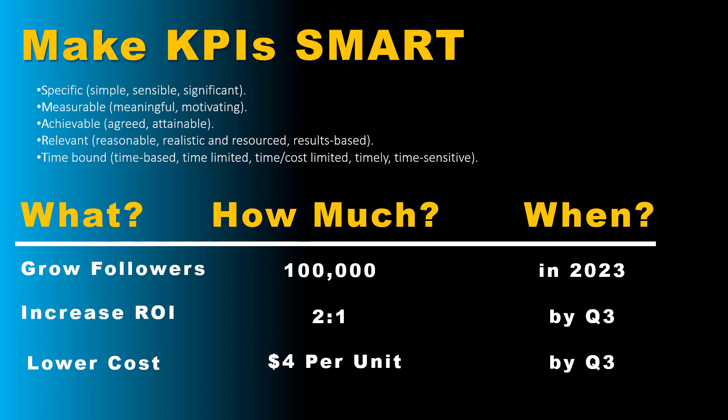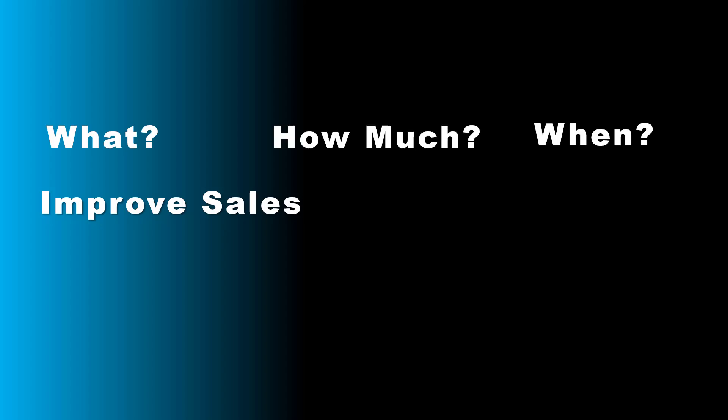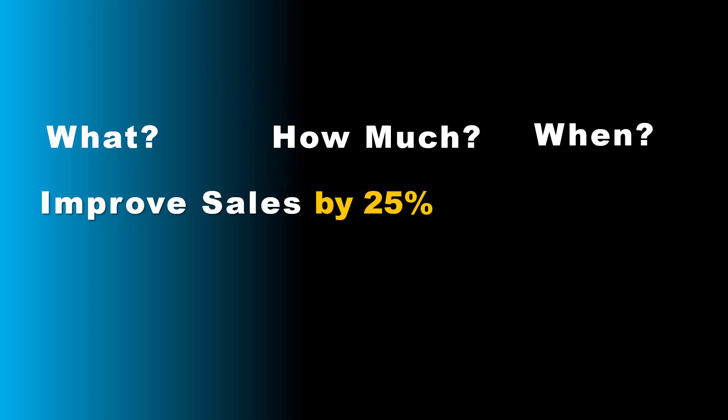For example: grow followers to 100,000 by 2023; increase ROI to 2 to 1 by Q3; lower costs $4 per unit by Q3. This is an easier way to formulate KPIs. The SMART method is also great, but the WHW method is just an easier way to remember things and create quick KPIs in discussion when you're an analyst. Going back to our original example of 'more sales' — the what is improved sales, how much is 25%, and when is by the end of the year.